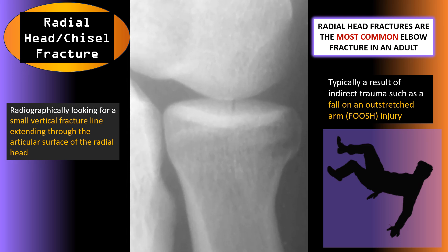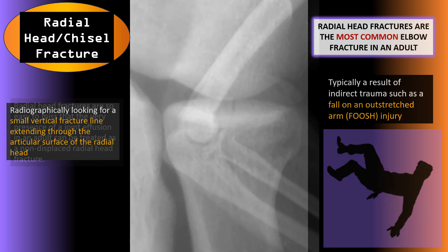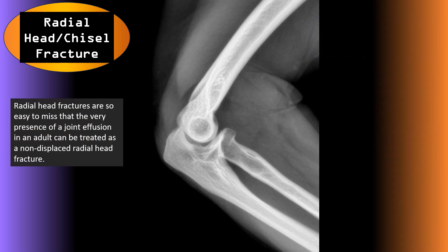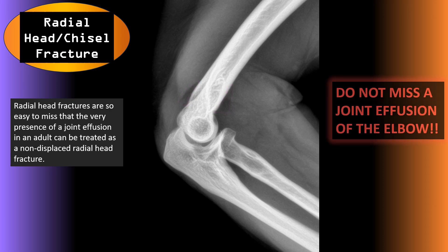Don't underestimate how easy it is to miss these fractures. Sometimes the fracture won't be visible on the x-ray, and the only thing you will be able to see is a joint effusion or abnormal anterior and posterior fat pads of the elbow. This is one of the first places you should look any time you see an elbow x-ray — do not miss a joint effusion of the elbow.